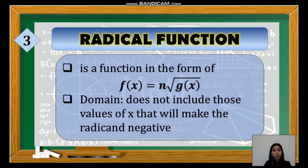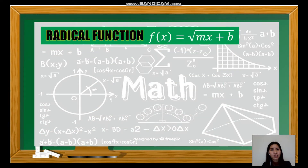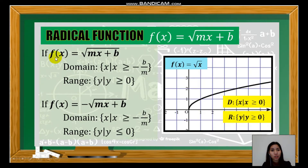The next is the radical function. It is a function in the form f(x) = ⁿ√(g(x)). In getting the domain, we have to exclude the values of x that will make the radicand negative, because when the radicand is negative, it will not result in a real number. The first case is f(x) = √(mx + b), where the radicand is a linear function. When the sign is positive, the domain is x ≥ −b/m and the range is y ≥ 0. When the sign is negative, the range becomes y ≤ 0.